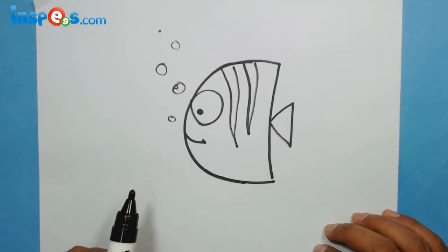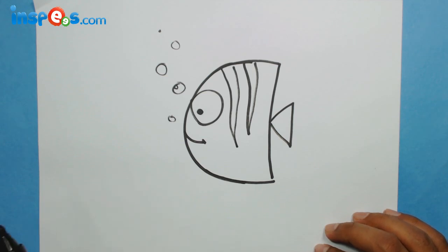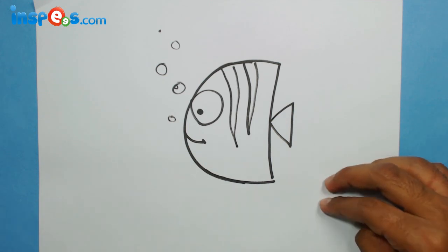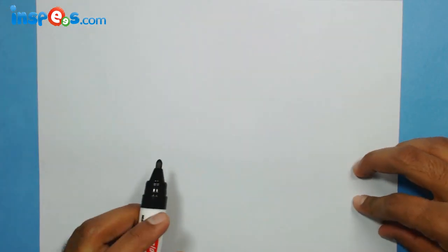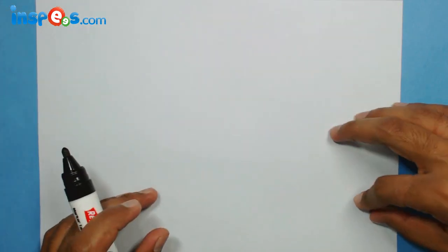Okay, this is a small tutorial and drawing for kids. Today I'm going to show you how to make a simple, cute fish with the alphabet C. So let's have a look. Now what I'm going to do is make C initially.